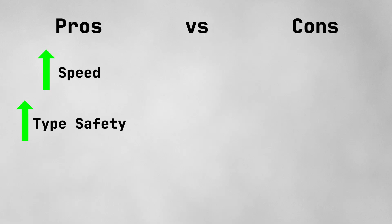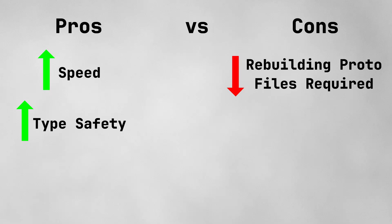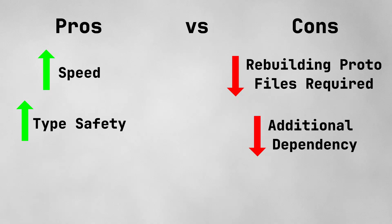Nothing is perfect. A trade-off you have to make is whenever you need to change your network message format, you will need to rebuild all of your .proto files for the relevant services. Using protobuf also requires that you manage another file in your project. When the project is small, it's not a problem to add a dependency. But when the project starts to get larger and larger, adding more points of complexity will make maintaining the software harder going forward. It's just something to take note of.